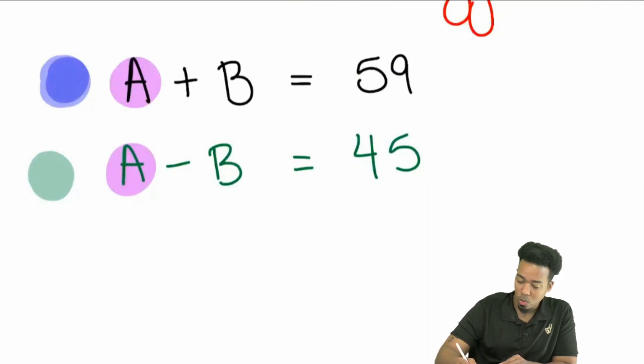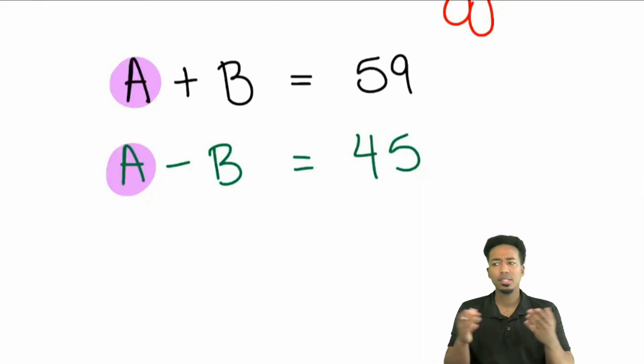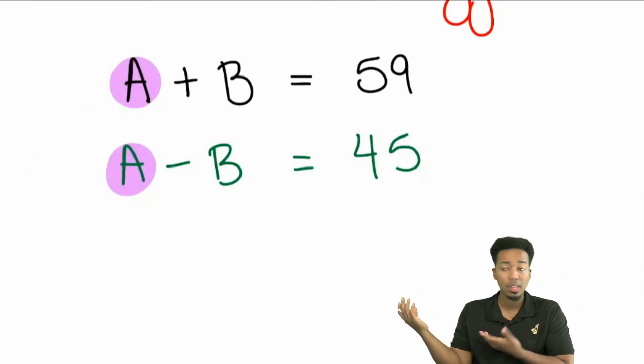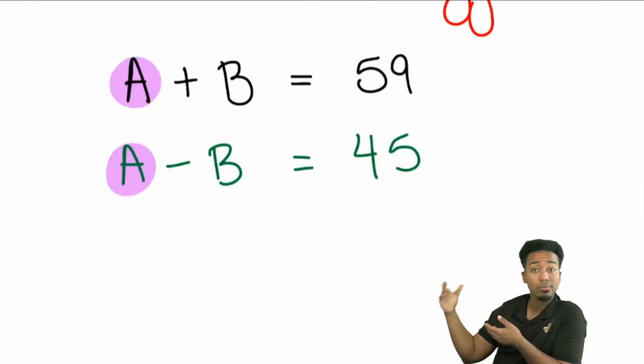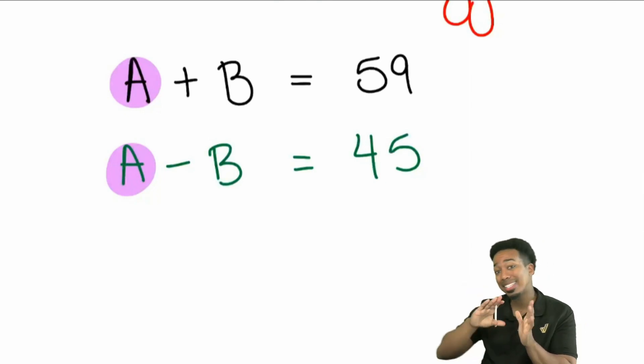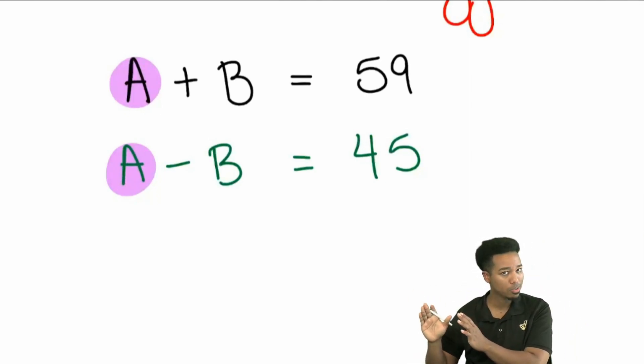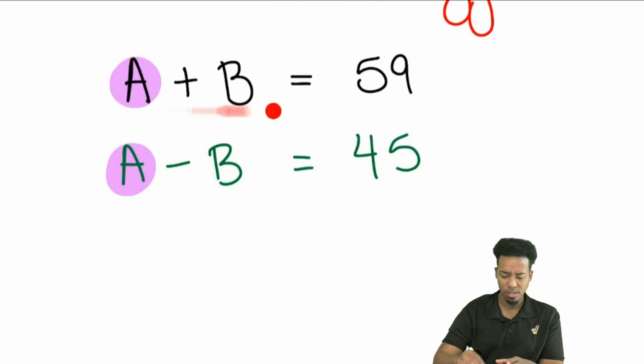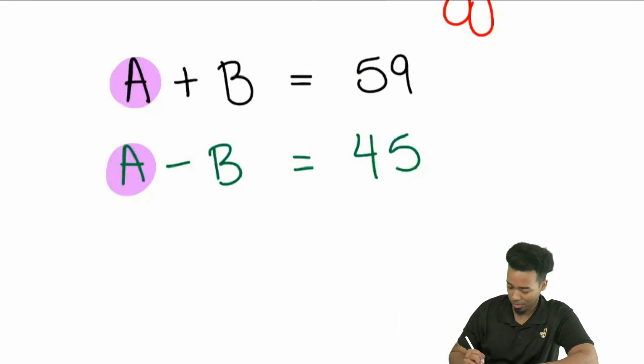When we have a system of equations, everybody, a system just means we got two equations or more that represent the same things. Both of these equations have A. Both of them have B. That's all that means. Two equations that represent the same thing. What we're going to do to solve this system is by taking away or eliminating one of the variables just so we can solve an equation with one. Because we can't solve this equation here by itself. You got two variables. You can't solve for one of it by itself. Same thing here. You got two variables. Can't solve it.